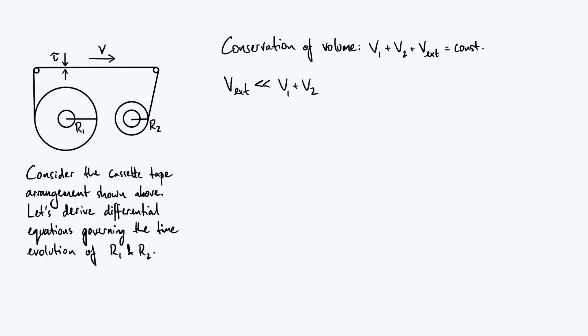And mathematically, I've expressed that as vx is much less than v1 plus v2. So combining that inequality with our original equation allows us to say that v1 plus v2 is approximately constant, to a very good approximation.